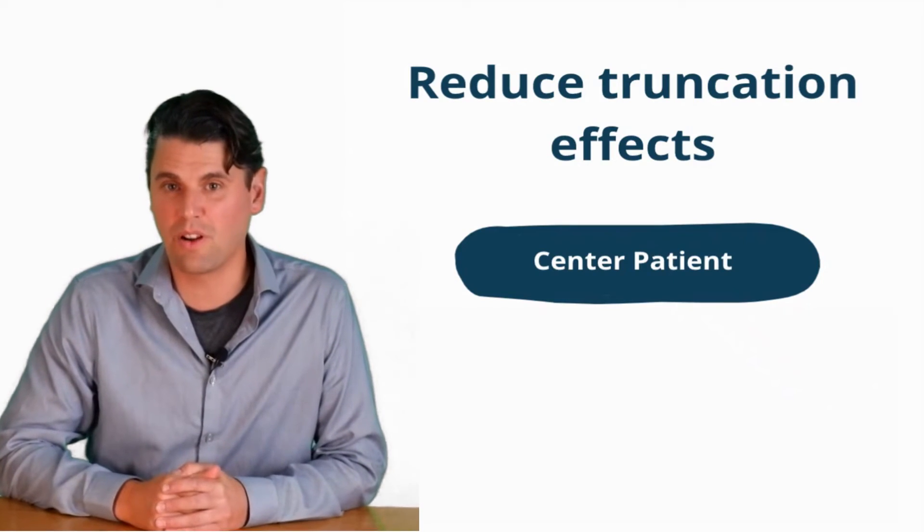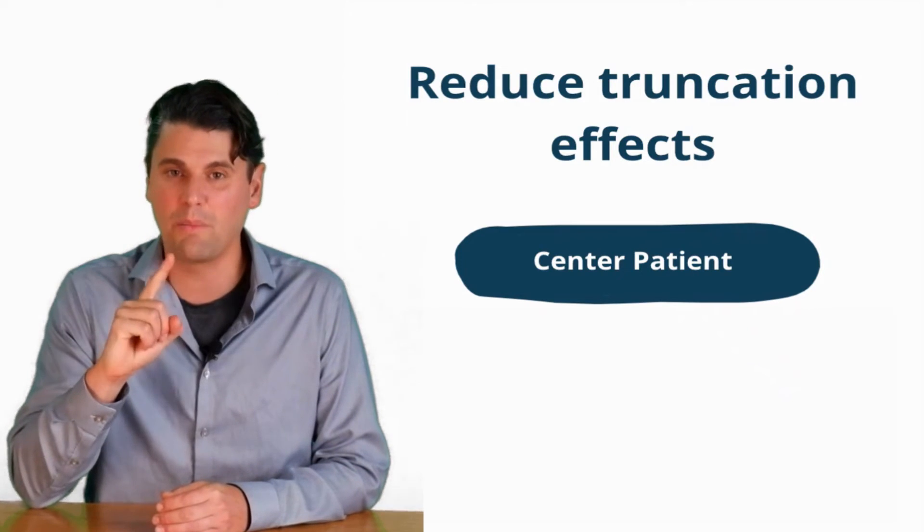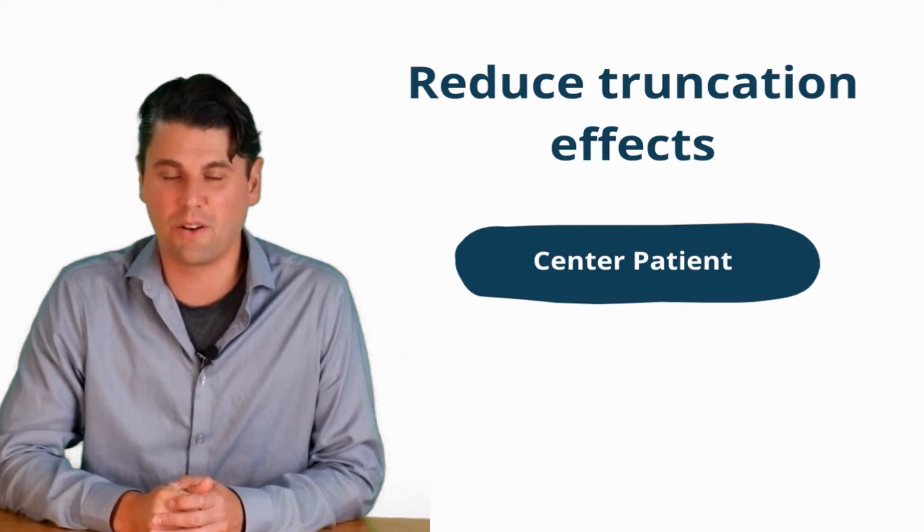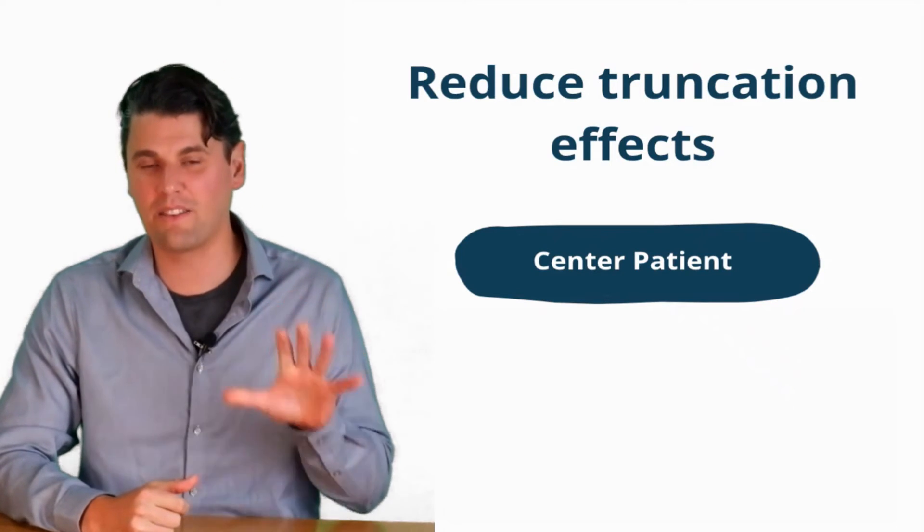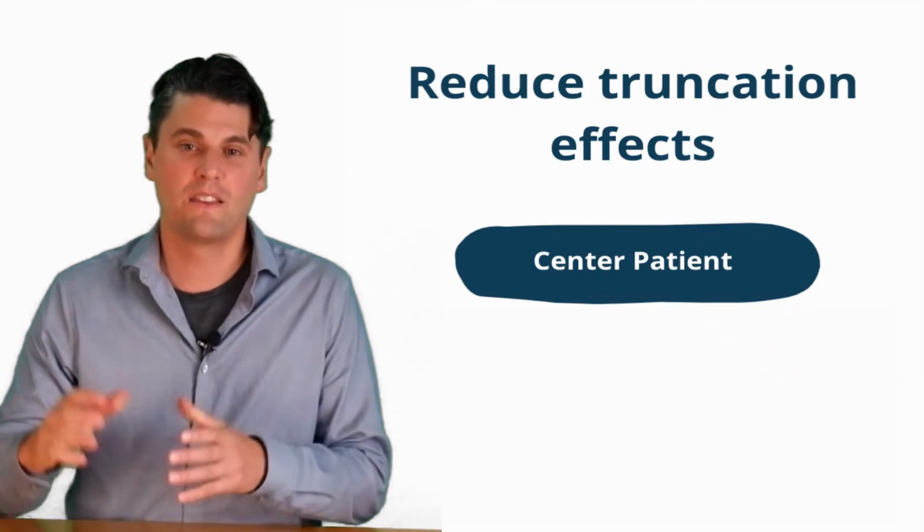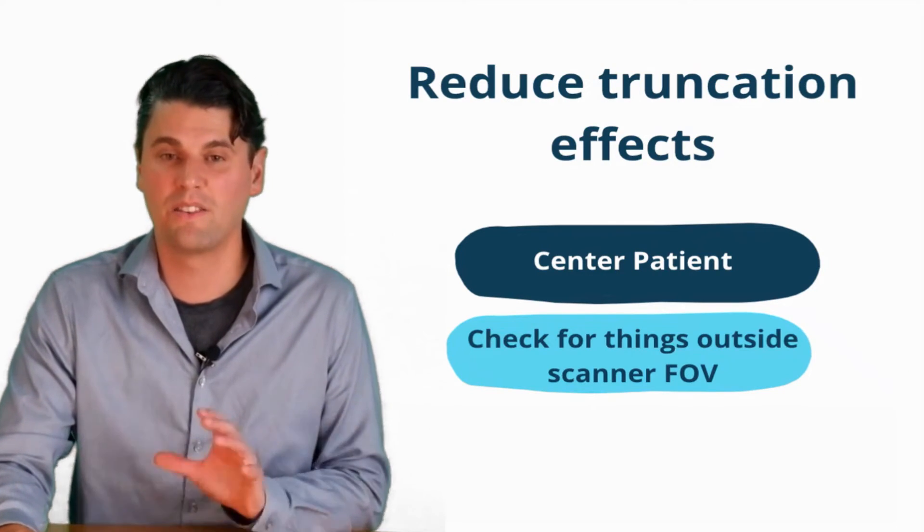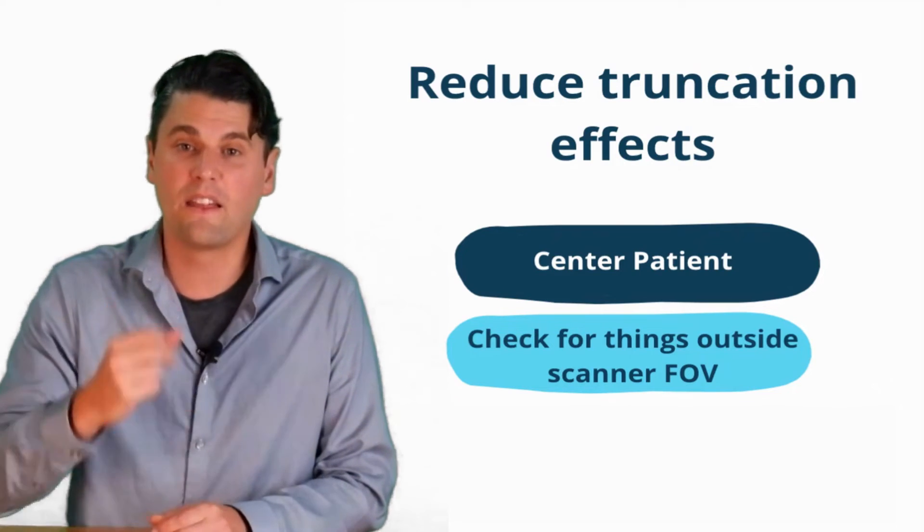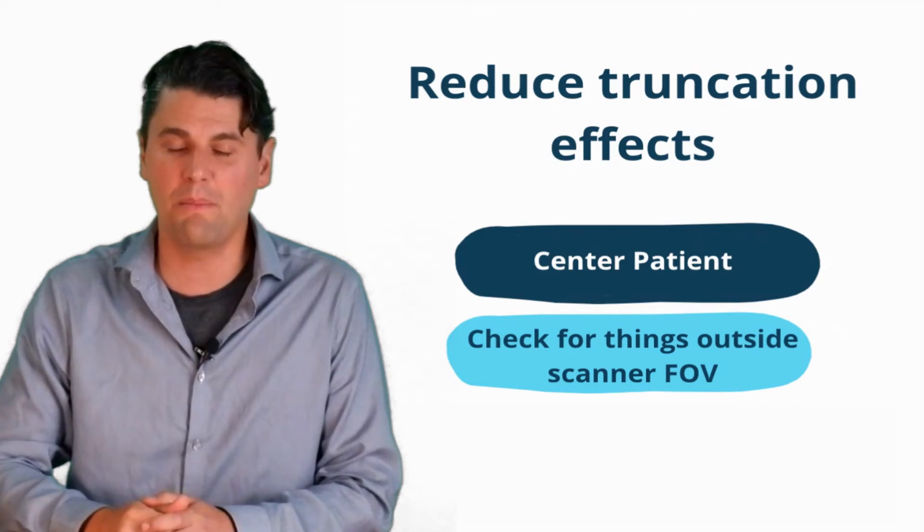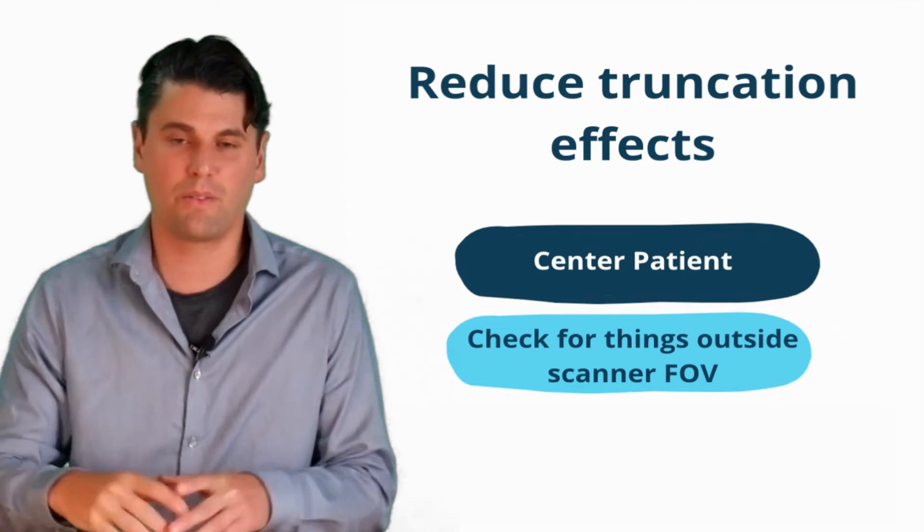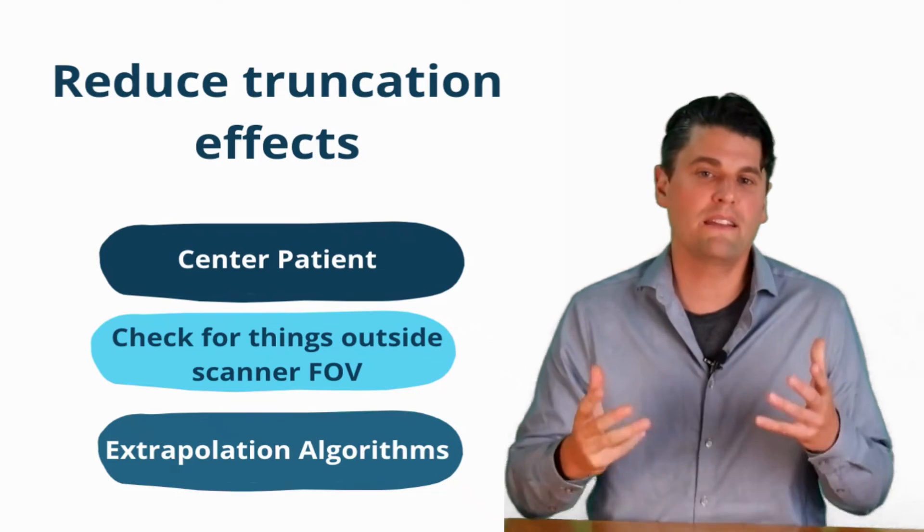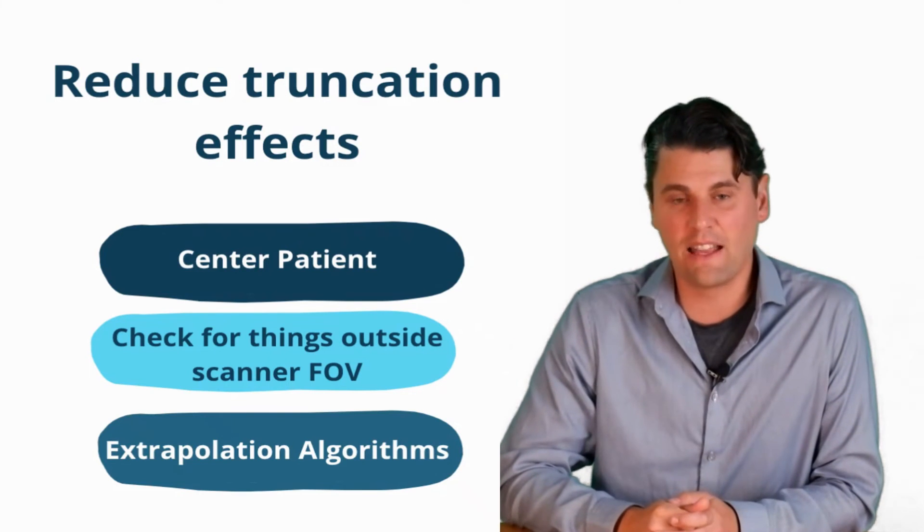So there's a few ways to reduce the truncation effects. Number one is to work on centering the patients well, make sure both side to side and up and down that the patients are relatively well centered. The vendors have tools to help in this regard. But a lot of times, if the patient's too large, or if they're in for a treatment planning setup, it might not be possible to get proper centering in order to totally account for that. And then number two, check and make sure there's not other things that are outside the scan field of view that will be contributing to the image, even though they're not intended to be. So this would be like extra things lying around or wires and whatnot.